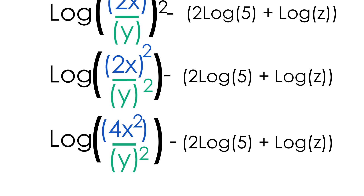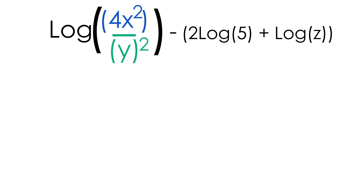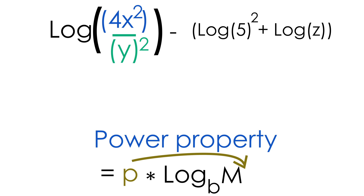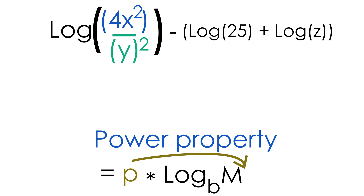Now let's look at the parentheses on the right-hand side. We can use the power property again because we have the number 2 being multiplied in front of log 5. We take that constant 2 and rewrite it as an exponent on top of the 5, giving us log(5²). Since 5 squared equals 25, we have log(25).